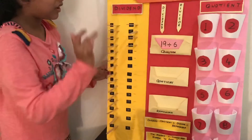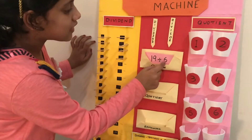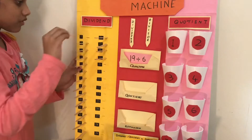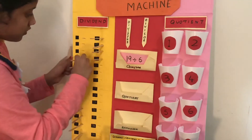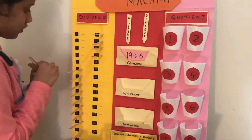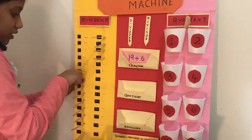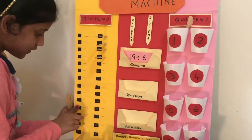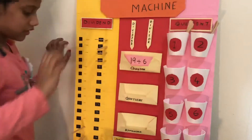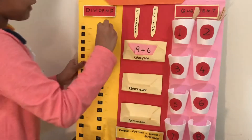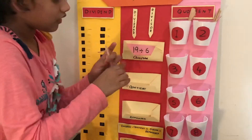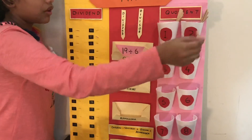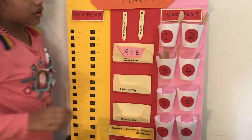We have put 19 stakes in our dividend column. The divisor is 6, so we must put 6 stakes in each cup. The 4th cup has only one stick, so that's the remainder.